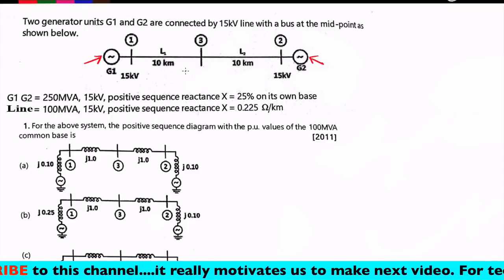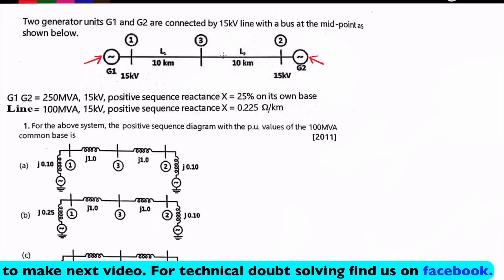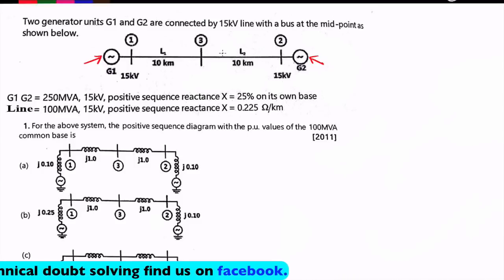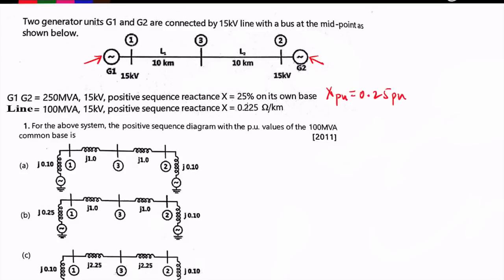There is no transformer connected, so throughout the line the voltage is 15 kV only — considering this is a lossless line. The length of line L1 is 10 km between bus 1 and bus 3, and L2 is 10 km between bus 3 and bus 2. The rating of generators G1 and G2 is 250 MVA at 15 kV, and the positive sequence reactance is 25%, so X per unit = 0.25 pu on 250 MVA base.